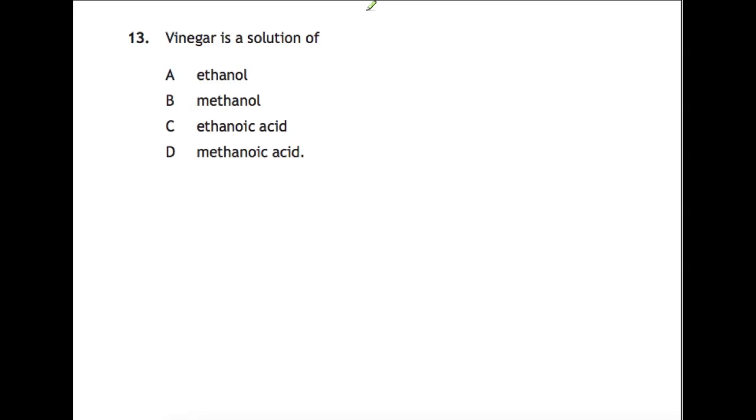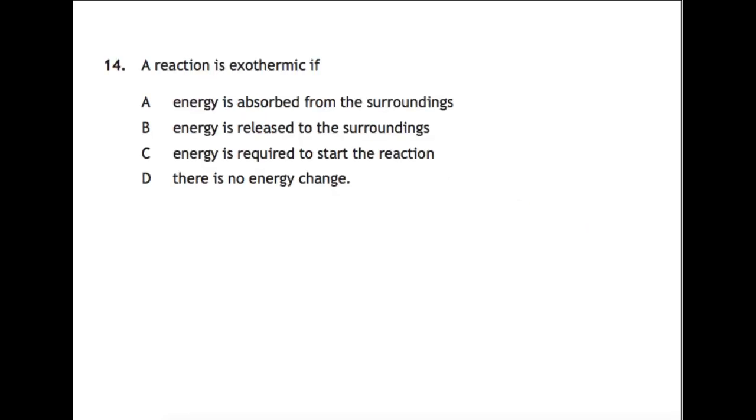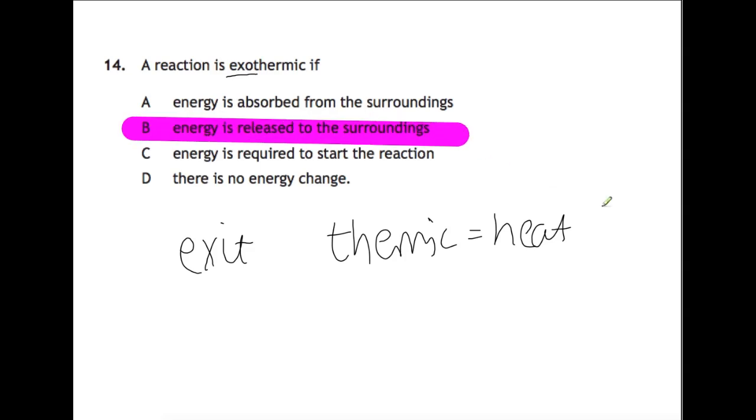Vinegar is a compound that you learn about and it is a solution of ethanoic acid. Now we're looking at reaction types. We have here that our reaction is exothermic. If we look at the word exothermic, we have exo for exiting and thermic for heat or energy in this case. So an exothermic reaction is one in which energy is released to the surroundings, which is B.